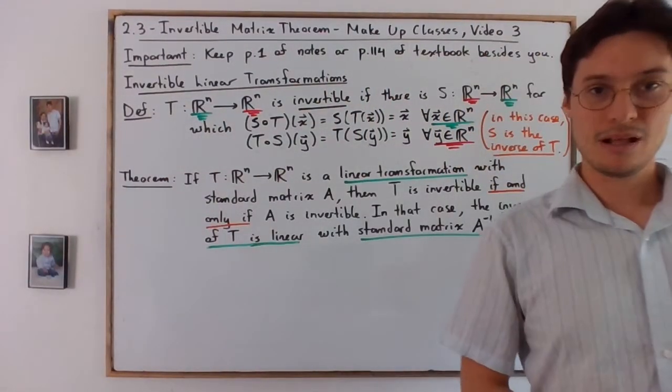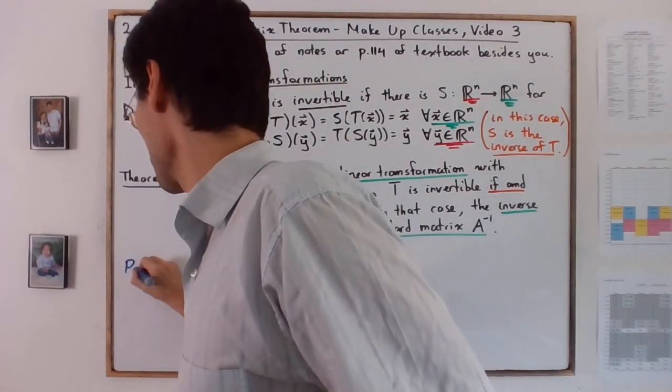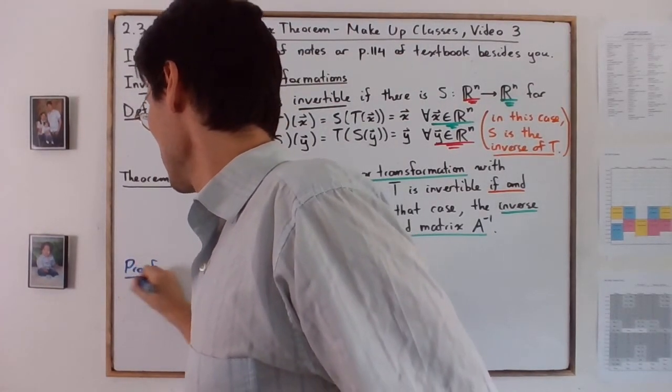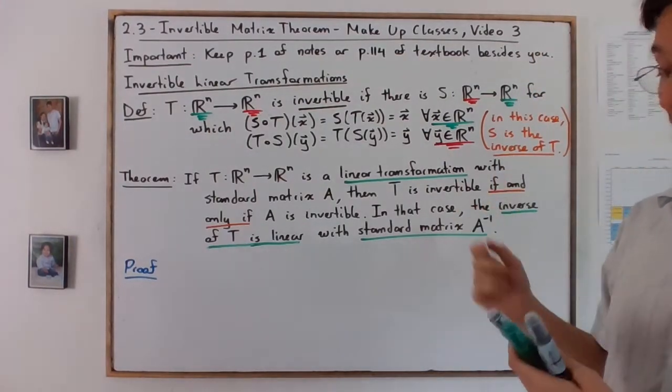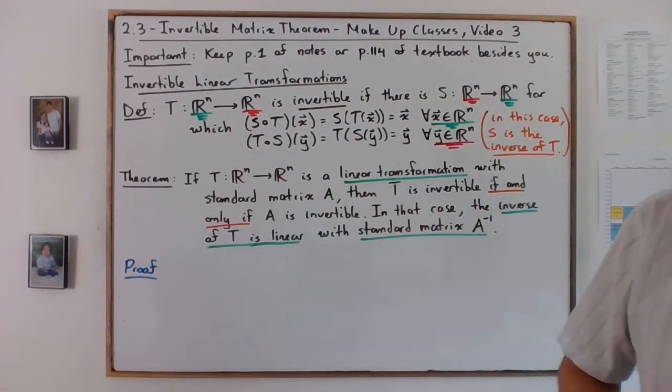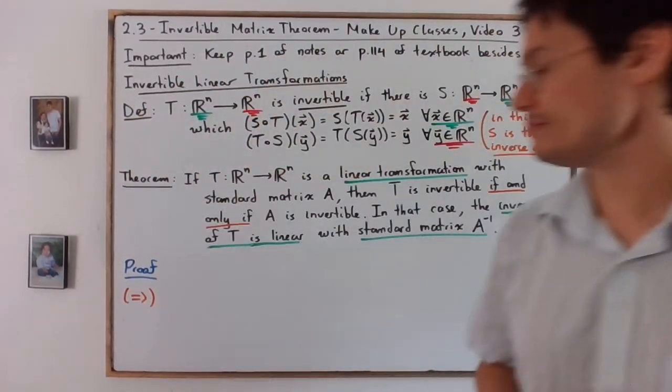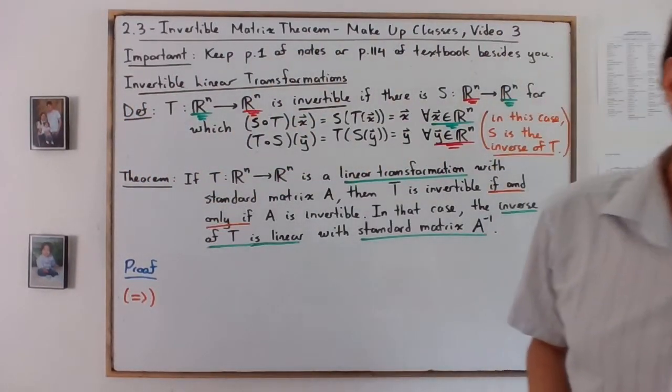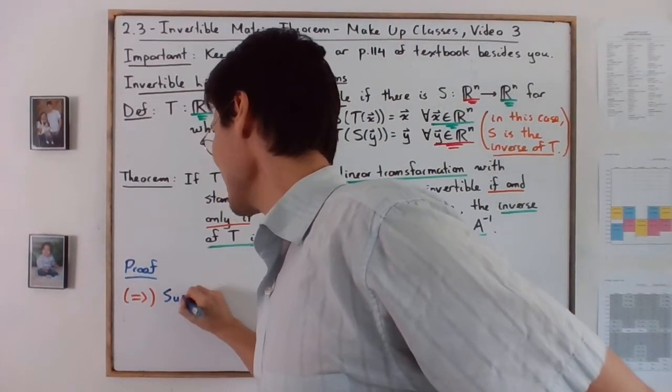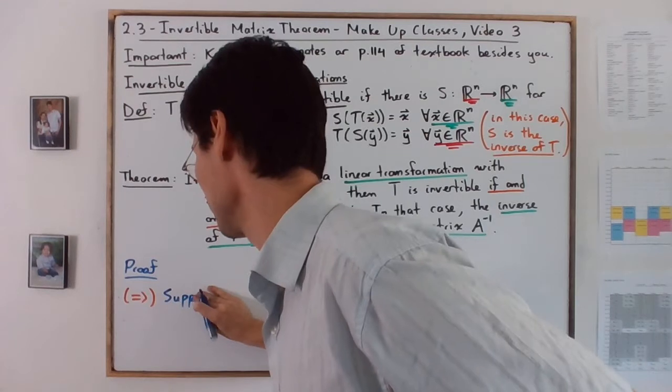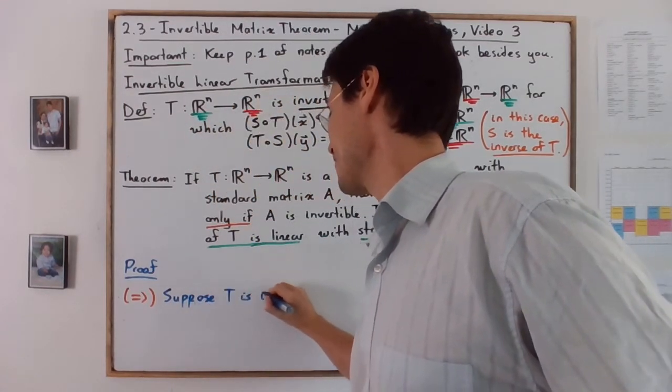Proof. As we do the proof, keep in mind the if and only if. We're going to start by proving this direction. First, let's suppose that T is invertible.